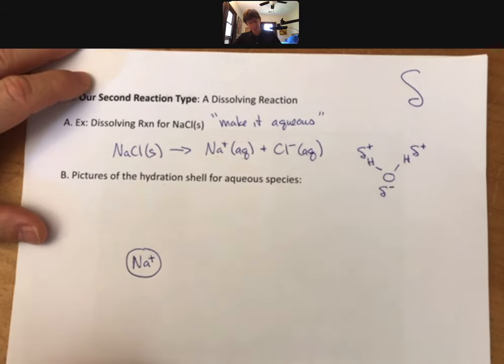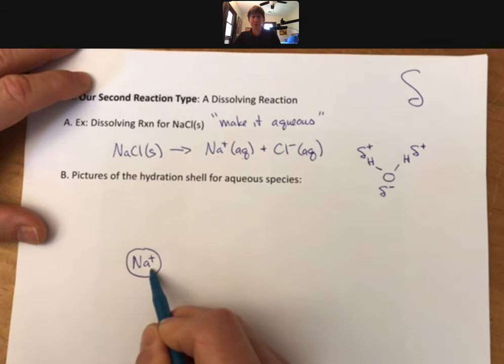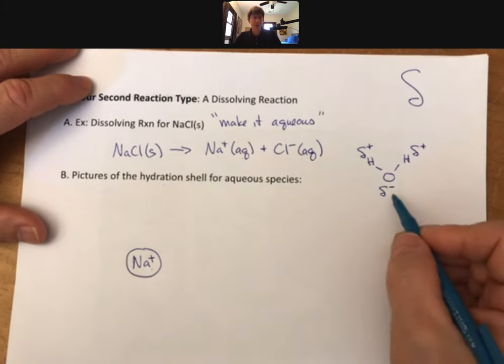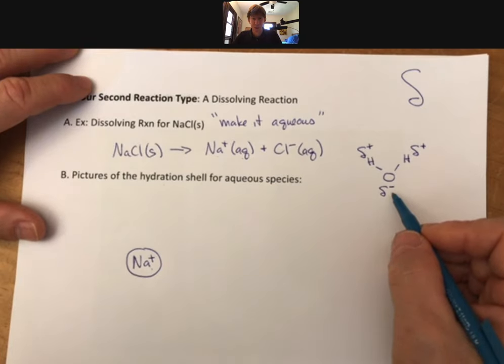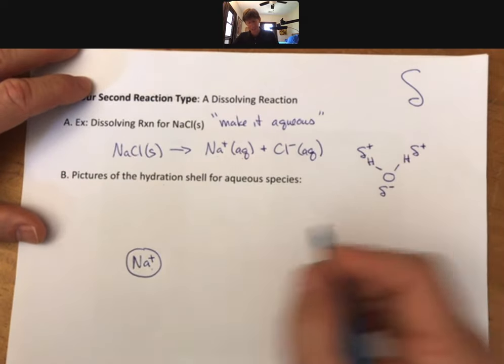What we need to know is that this partial negative of oxygen is attracted to the full plus one positive charge of sodium. And partial here just means less than one, but greater than zero, or less than negative one, but not zero.